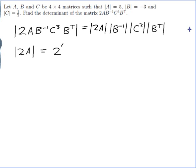So that means it must be 2 to the power of 4 times the determinant of A, which is 2 to the power of 4 times 5, which comes out to 80.